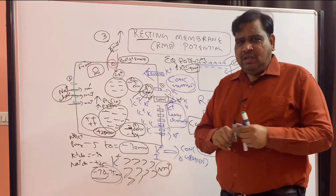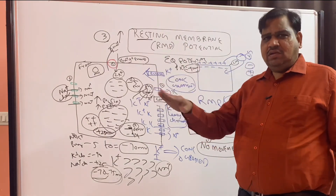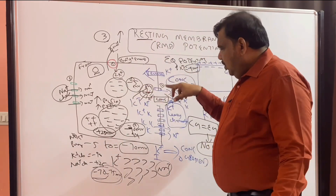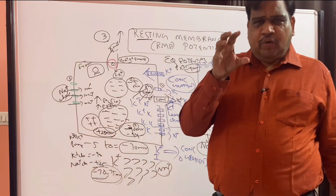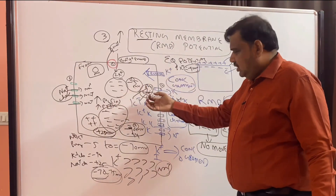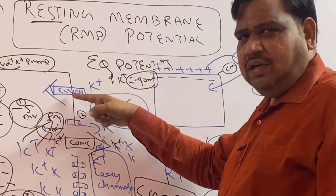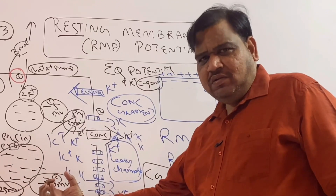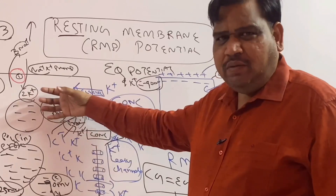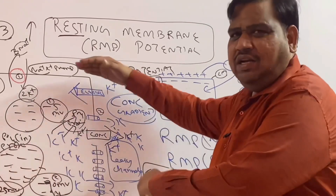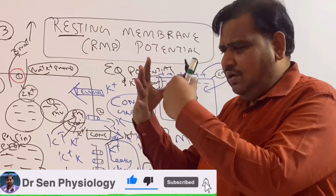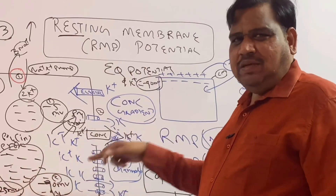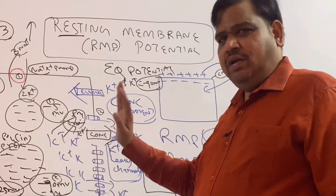I explained a little about equilibrium potential. Equilibrium potential is the potential at which there is no further movement of ions. For example, with potassium leakage channels, potassium is going outside; with sodium leakage channels, sodium is coming inside. The equilibrium potential of potassium means the potential at which potassium will not move further. That is the balance between the concentration gradient — driving potassium out — and the electrical gradient — pulling potassium in. This balance is reached at around minus 85 to minus 90 millivolt.